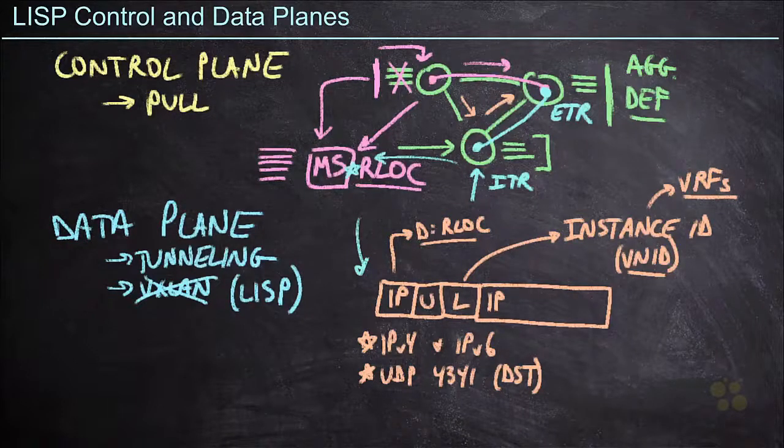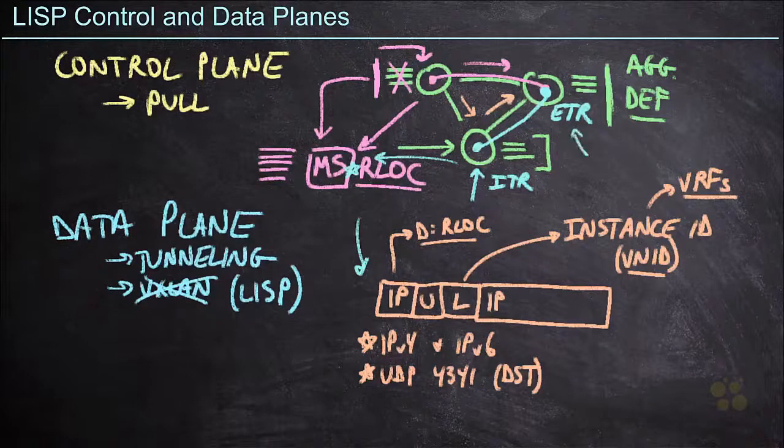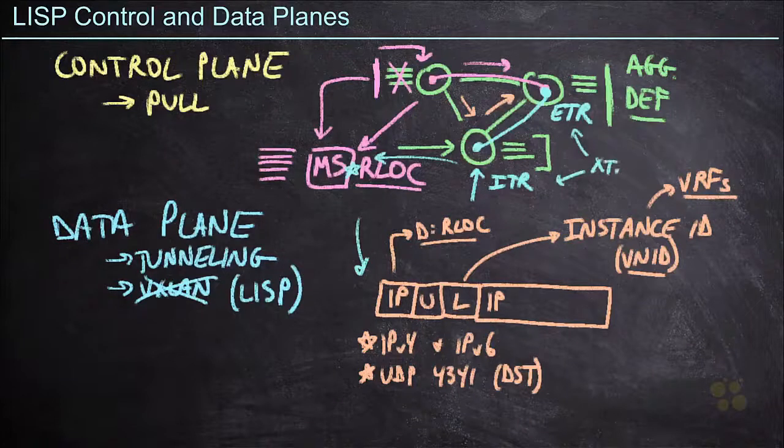Now, in the software-defined access world, both of these would be referred to as fabric edge nodes. However, in LISP, if we just want to speak generically, we'll call them an XTR, meaning it could be an ingress or egress tunneling router either way.